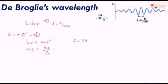We will replace nu over c by 1 over lambda according to this equation. So mc will be equal to h over lambda.